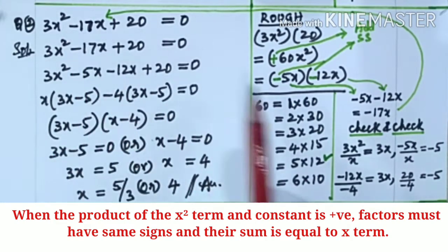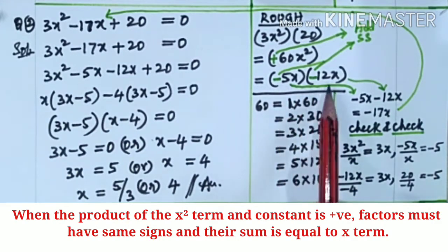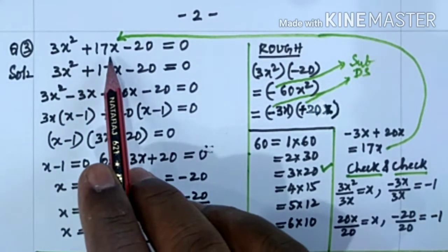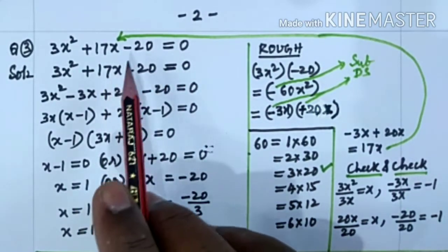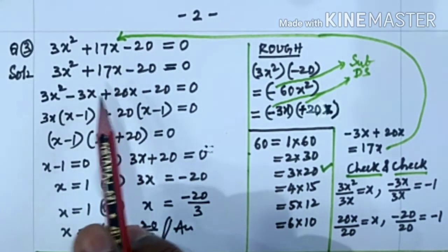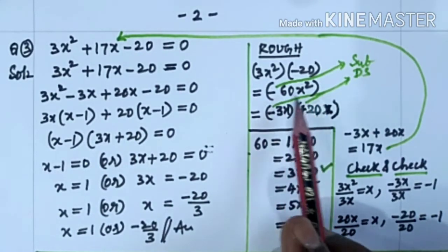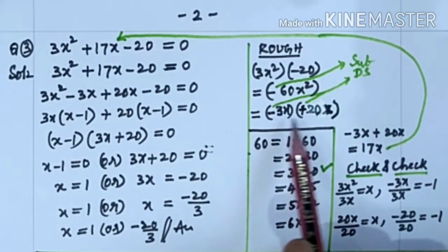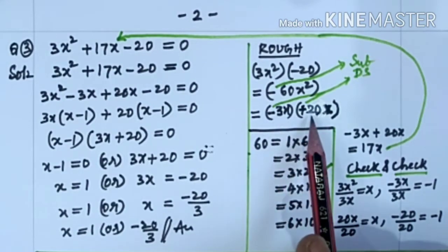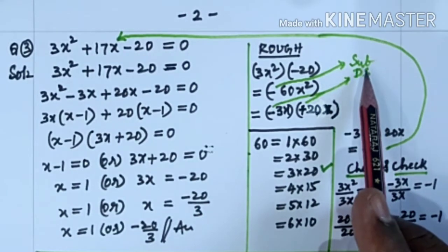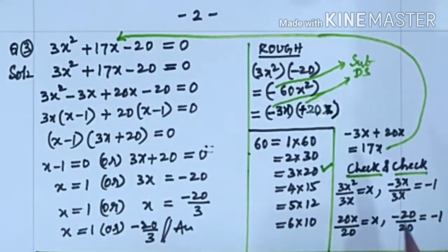Since we have minus here, both signs are negative. Now 3x² + 17x - 20 = 0. Observe carefully — we have minus here. 3x² into minus 20 is minus 60x². We have minus here, so subtraction, and the factors should have different signs. Here we have 17; after subtraction we should get 17. So we have to take 3 and 20.